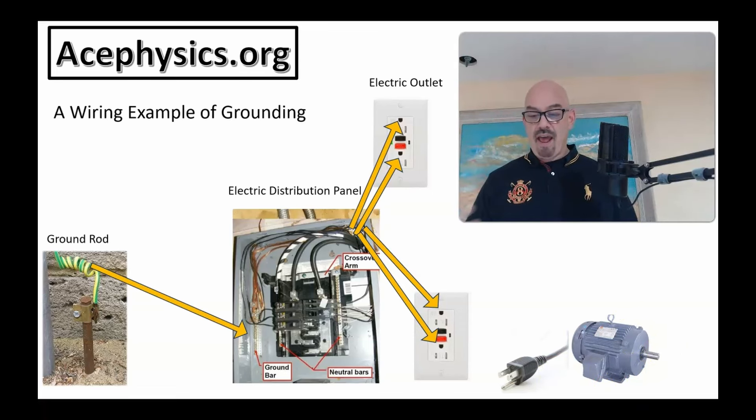And so if it's grounded, as the charge forms on the outside case, the case is grounded, which means that charge will funnel off and follow the whole path and eventually end up at the ground rod and go into Earth. And so one reason we ground things is for electrical safety.